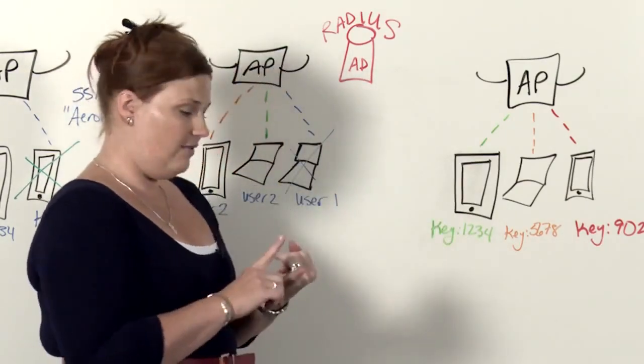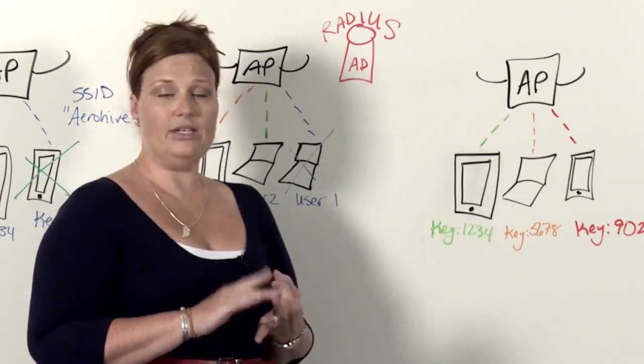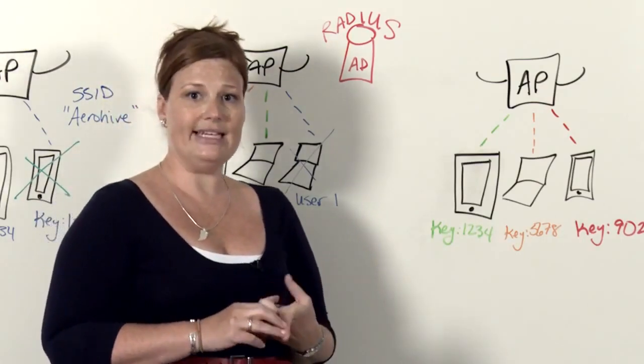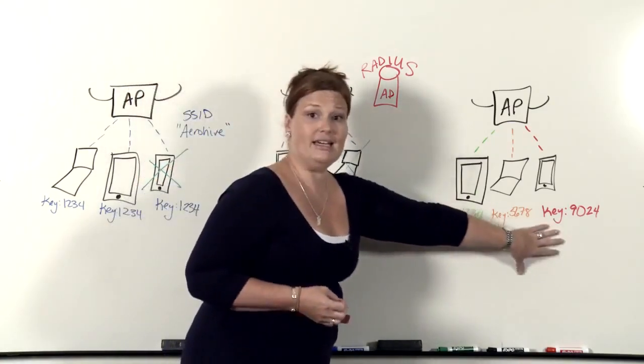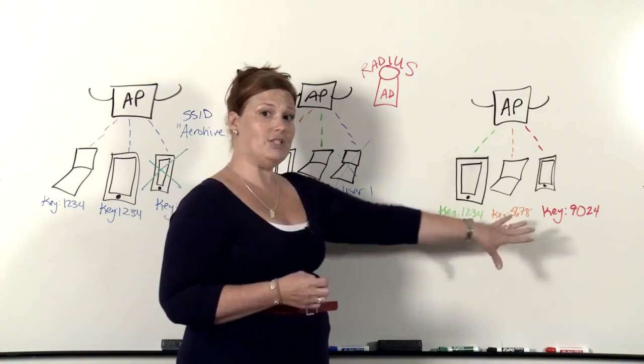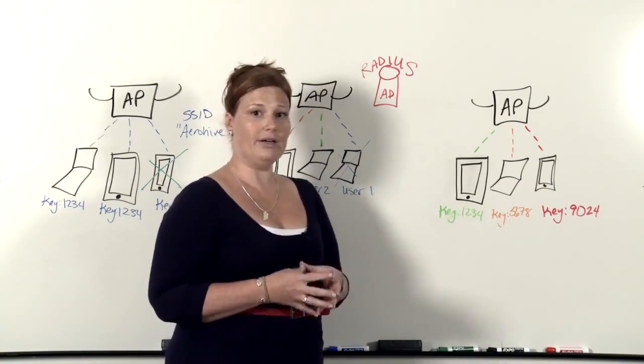And then they can assign different policies based on the key that that user has used to connect to the network, such as VLAN, firewall policy, QoS policy, tunneling policy. And even more importantly, each user has this unique encryption key. So none of them can see each other's traffic when they're connected to the network.